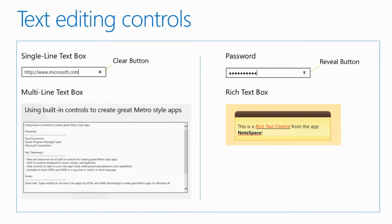Moving along, obviously we have text boxes: the single-line text box, multi-line text box, the password text box, and the rich text box. For the single-line text box, one of the new things you'll see for Windows Store apps is a clear button — you can click it and it clears the contents. There's a reveal button on the password box — while holding it down or touching the screen, you temporarily see the password contents.